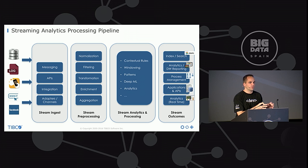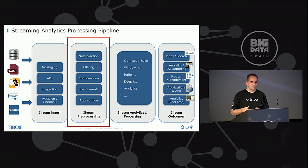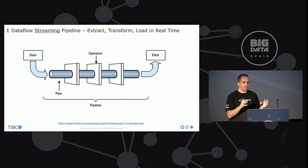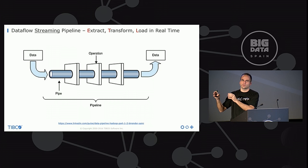Depending on whether you want to use open source frameworks, cloud services, or products, it differs in how many different frameworks you need. The stream pre-processing part is like a data pipeline where you integrate data — you could call it extract-transform-load, but it's in real time. You really process the data while it is in motion, not via request-response like classical ETL batch processing for a data warehouse.